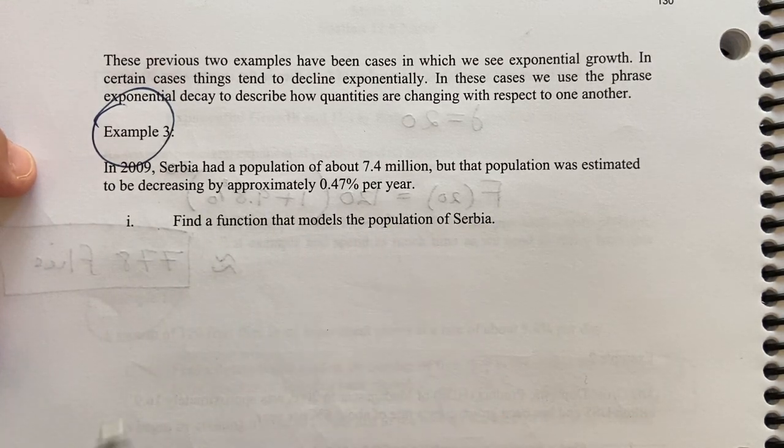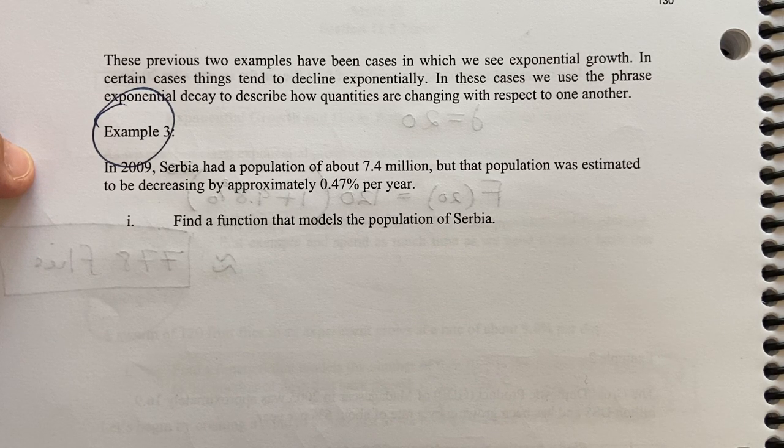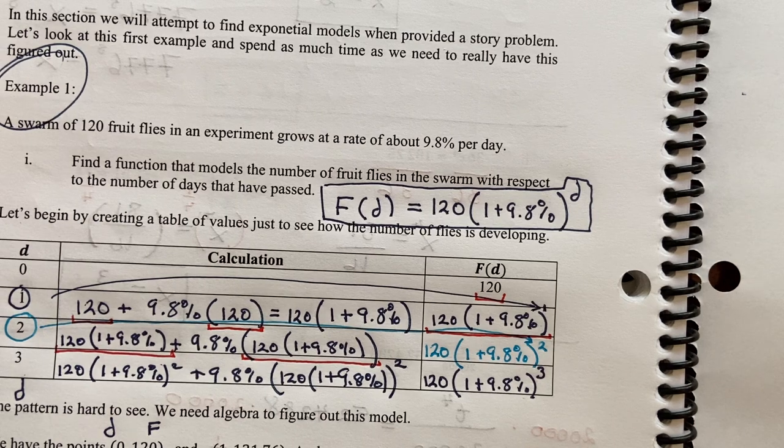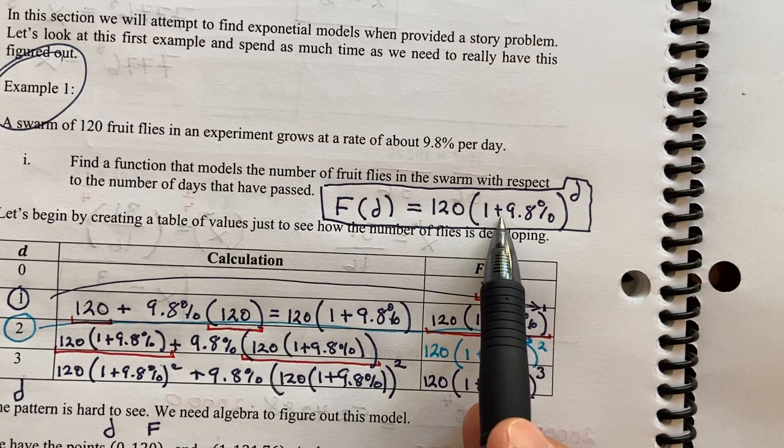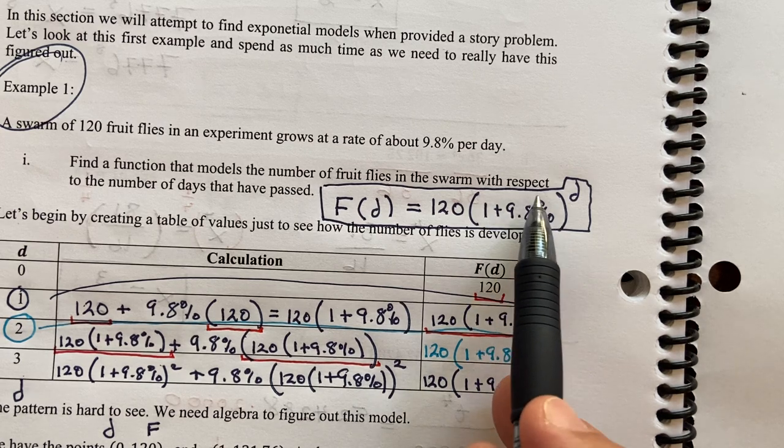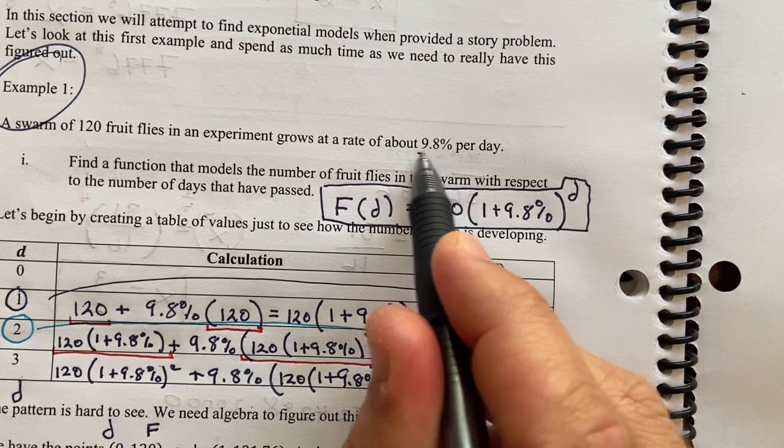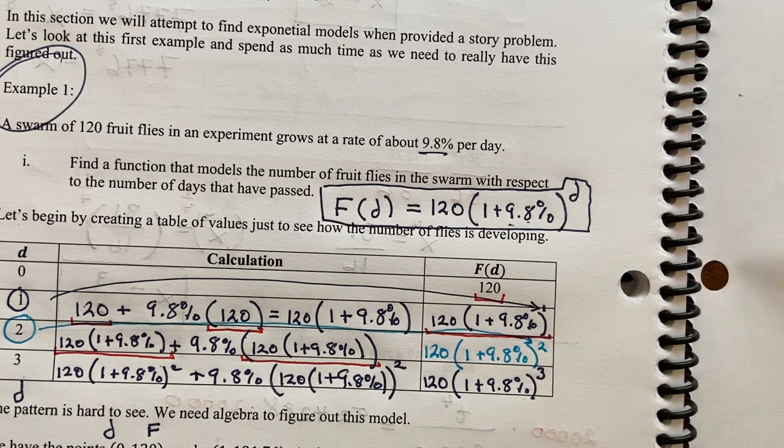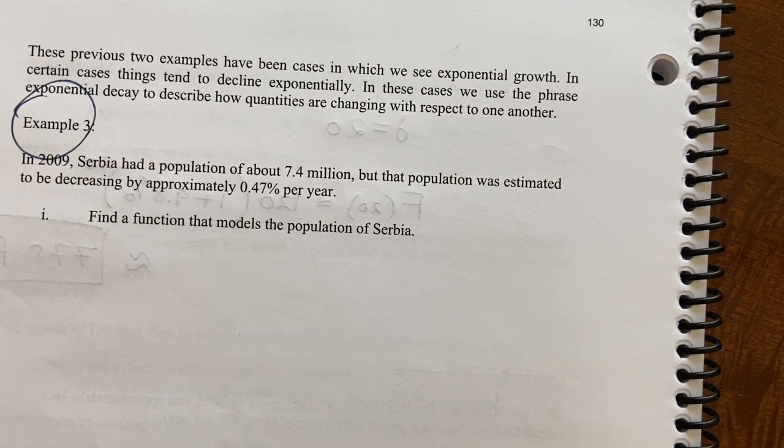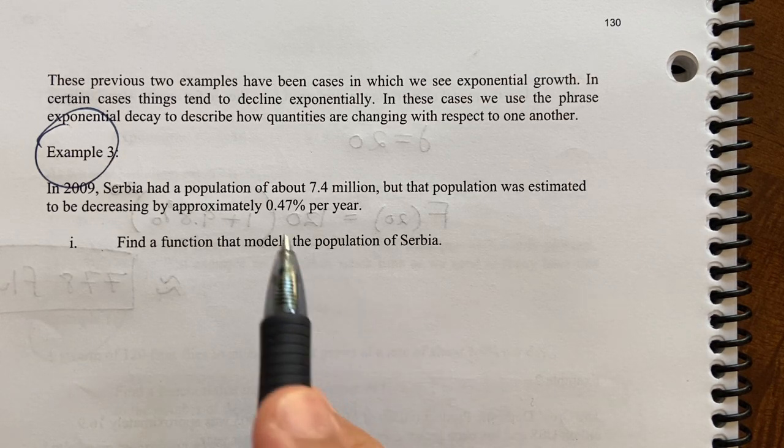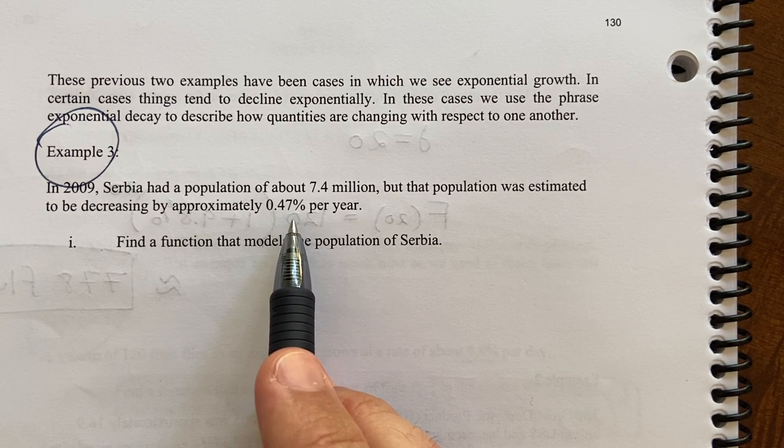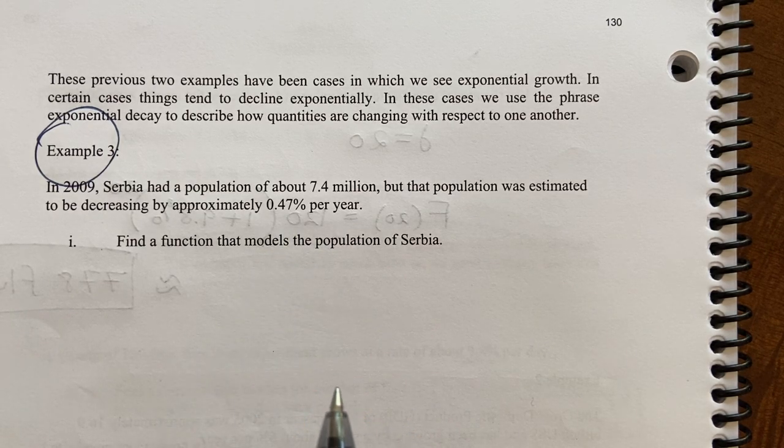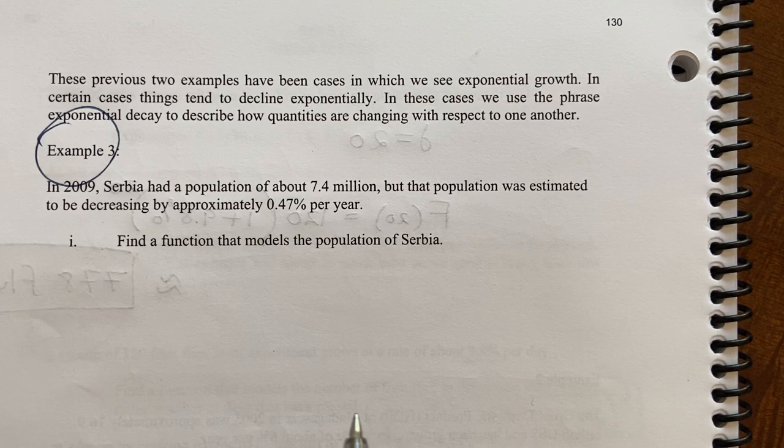So the population of that country was actually going down over time. It says, find a function that models the population of Serbia. What I'm encouraging you to do is step back and think about what we got here. When the growth rate was going up by 9.8%, we took 1 plus 9.8%. The thing about this Serbian problem is that this percentage is subtracting from the population. So I can write down the formula pretty quickly.